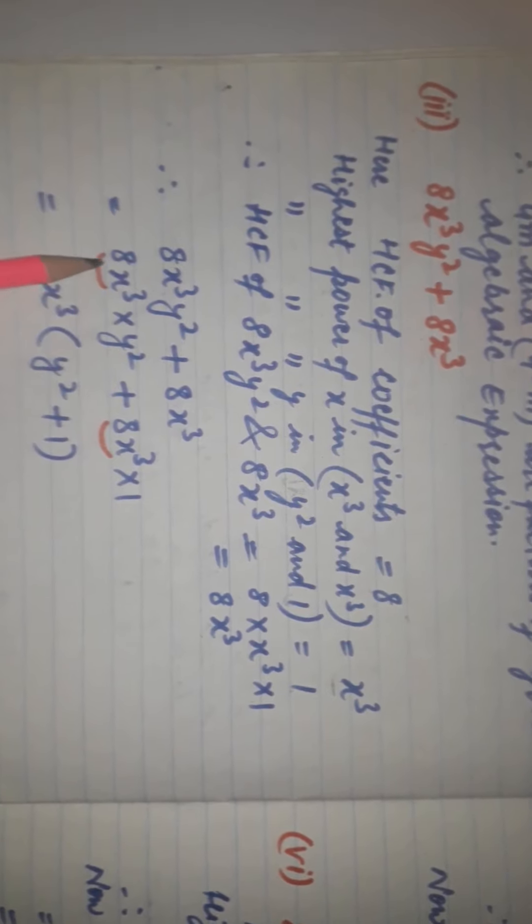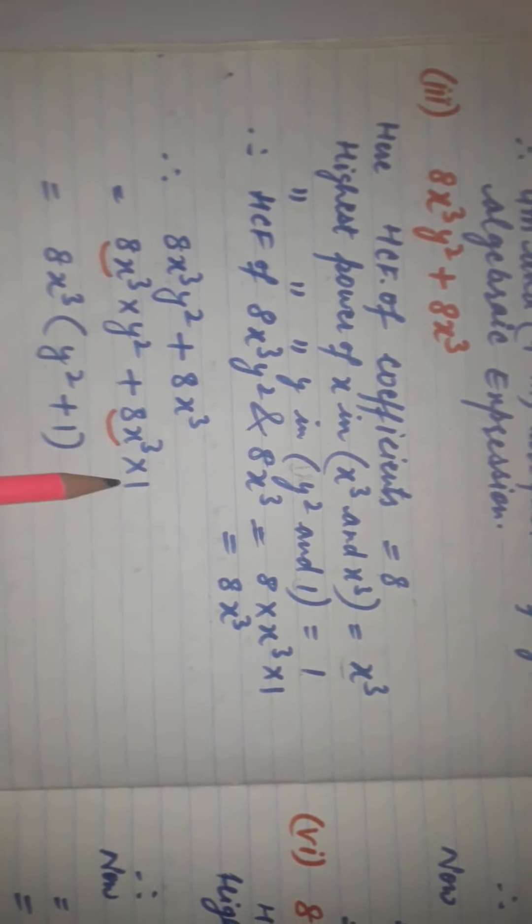We write 8x³y² as 8x³ into y², and 8x³ as 8x³ into 1. Taking 8x³ common from both terms, we get 8x³(y² plus 1). This is the factorized form of the algebraic expression 8x³y² plus 8x³.